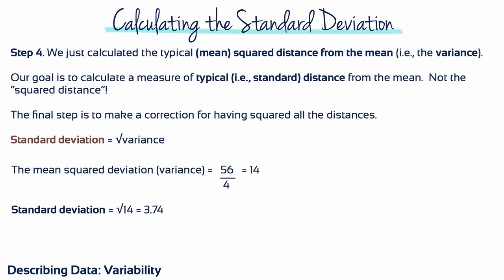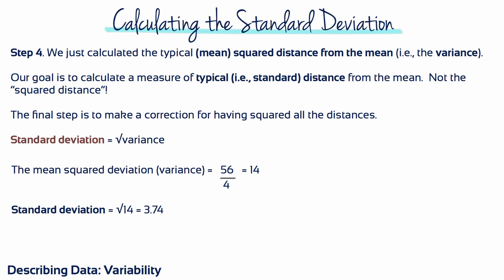The process of squaring deviation scores does more than simply get rid of the plus and minus signs — it results in a measure of variability based on squared distances. The concept of squared distance is not intuitive; for example, it's not particularly useful to know that the squared distance from New York City to Boston is 26,244 miles squared. Therefore, we will continue the process one more step. Our goal is to calculate a measure of typical, or standard, distance from the mean — not squared distance. So we need to take the square root of the variance to get the standard deviation. The variance equaled 14, so the standard deviation equals the square root of 14, which is 3.74.